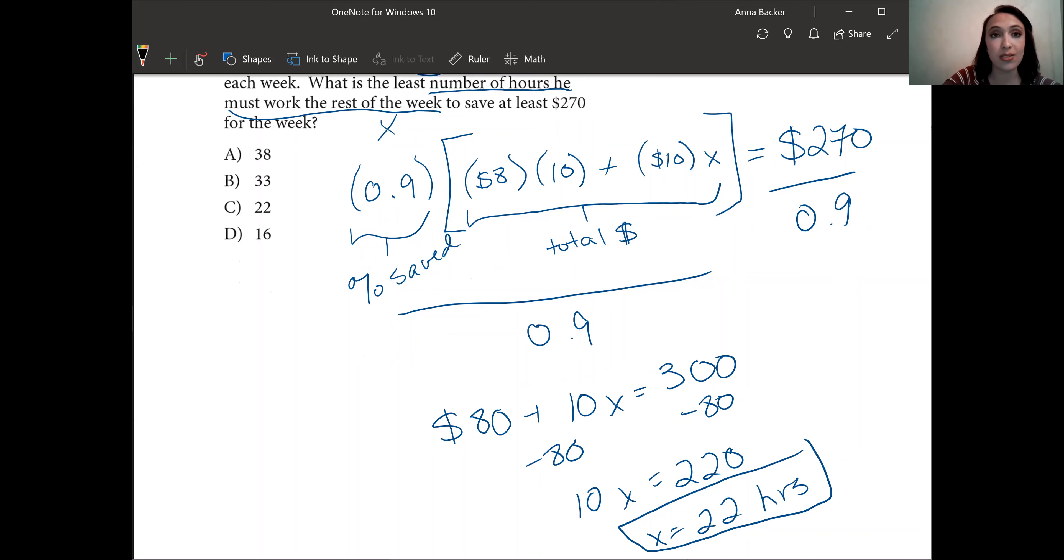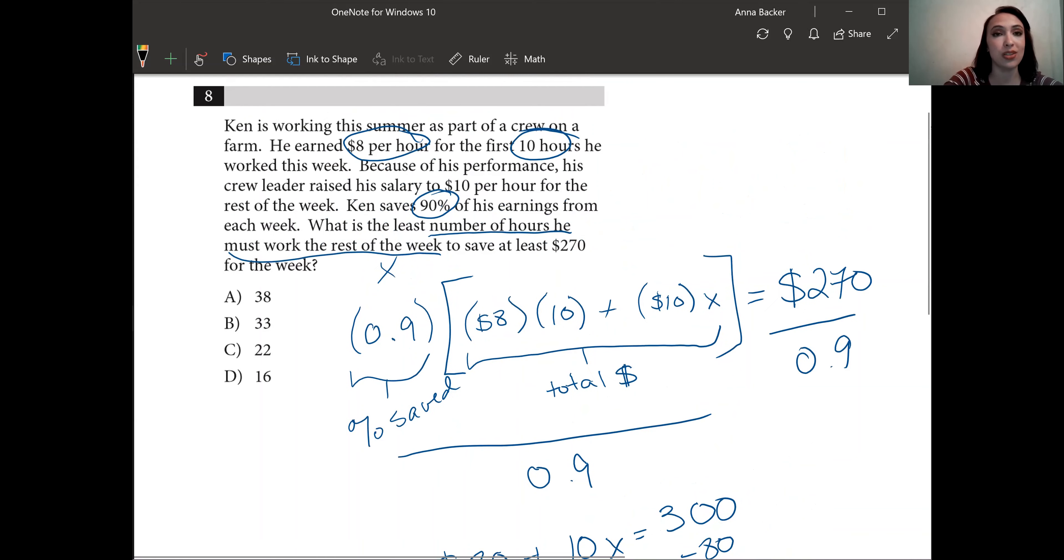The least number of hours that Ken has to work in order to save $270 is 22, which matches with answer choice C.